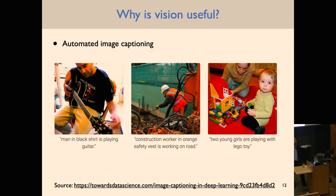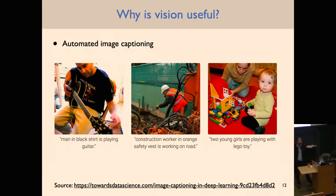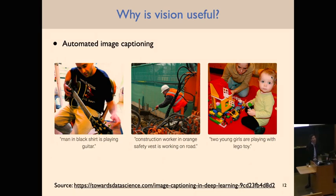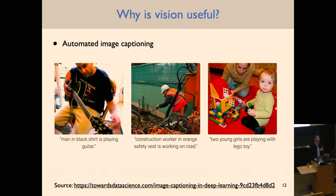Student question: how much do these recent models take semantics into account, versus just picking which numbers are best from a dataset? The answer is the latter — semantic information is automatically learned. It's very much a case of: here's a gigantic dataset — basically all the images on the internet with associated captions — and learning how to take a new image and come up with an associated caption.